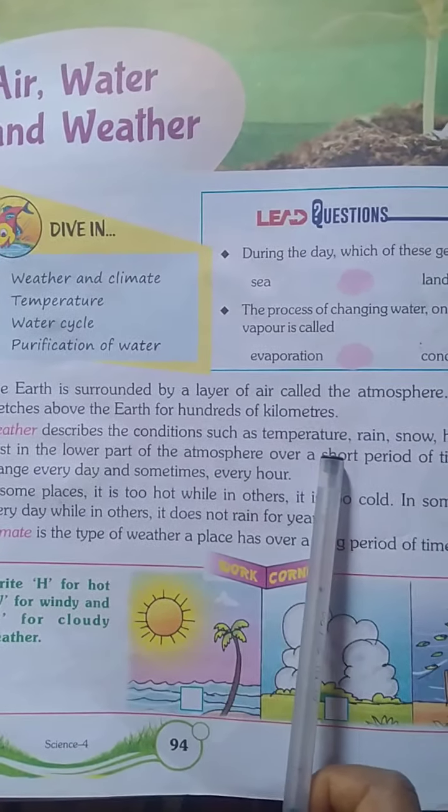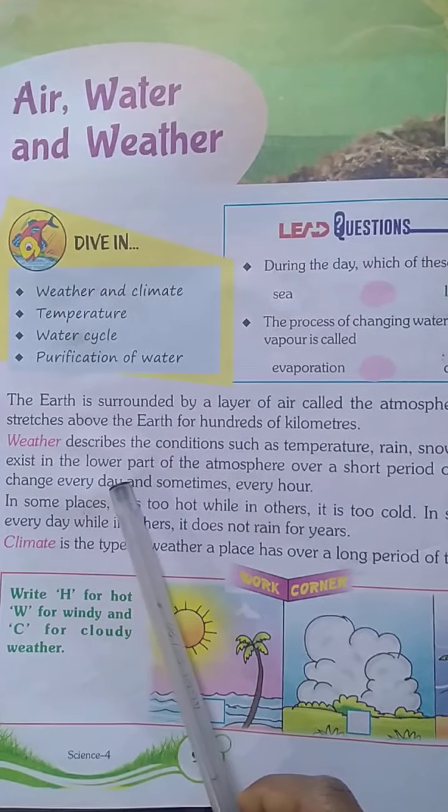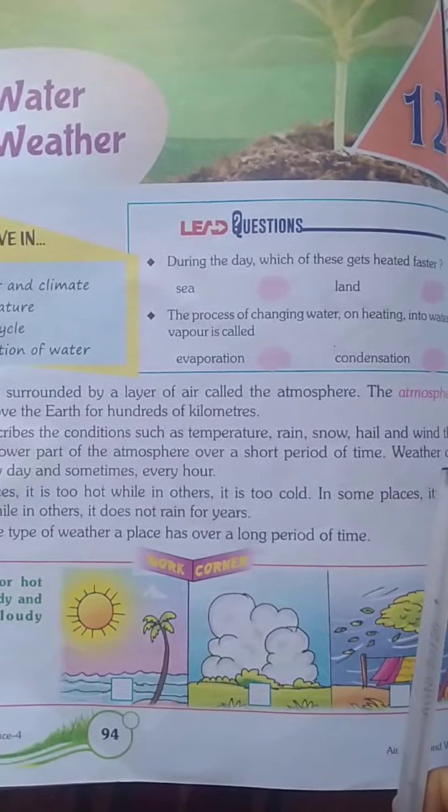Weather describes the conditions such as temperature, rain, snow, hail and wind that exist in the lower part of the atmosphere over a short period of time. Weather can change every day and sometimes every hour.